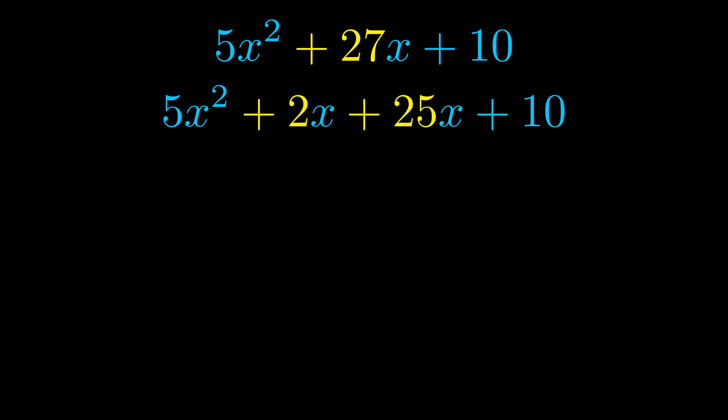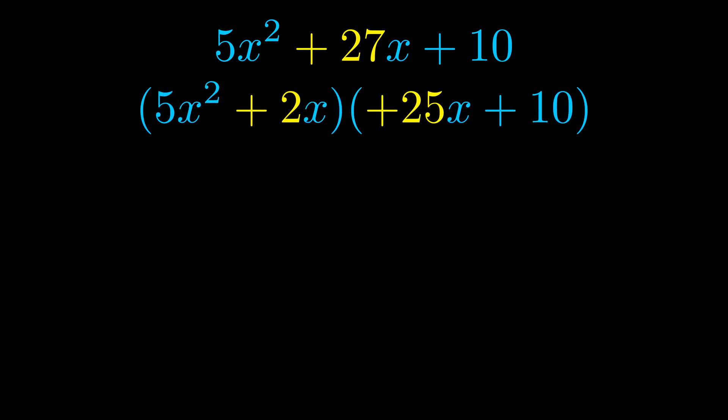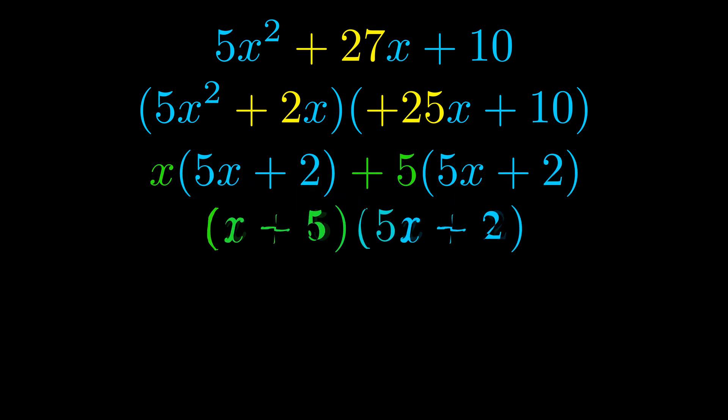Once we've done this, we go ahead and put parentheses around the first term and the last term. And we do that so that we can take the greatest common factor out of both terms. We can see the greatest common factor is now outside in green. Notice also how what remains inside the parentheses is the same in both cases. The blue values are the same.